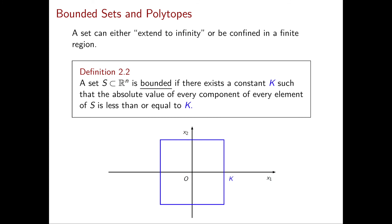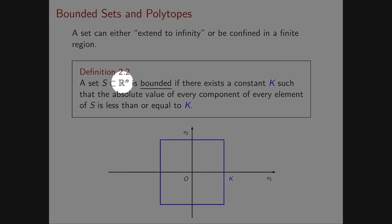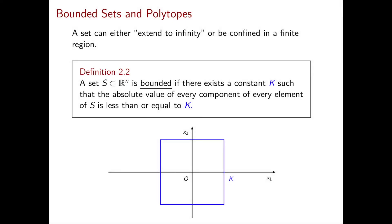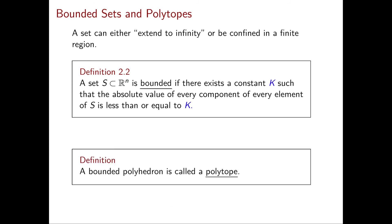To introduce the third fundamental property, I need a couple more definitions. We say a subset S of R^n is bounded if there exists a constant k such that every component of every vector in S is less than or equal to k in absolute value. Intuitively, this means the set can be contained in a large enough but finite box. A polyhedron that is also bounded is called a polytope.